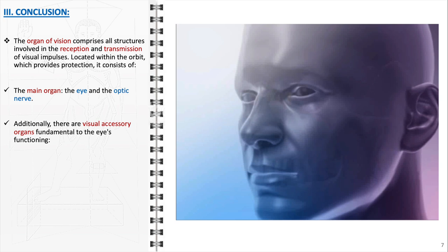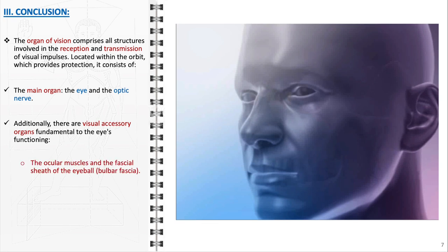Additionally, there are visual accessory organs, fundamental to the eye's optimal functioning. These include the ocular muscles and bulbar fascia, responsible for moving the eyeball, allowing it to rotate in various directions for a broader field of vision. The bulbar fascia, or the fascial sheath of the eyeball, provides a supportive casing, aiding in the eyeball's movement and maintaining its position in the orbit.